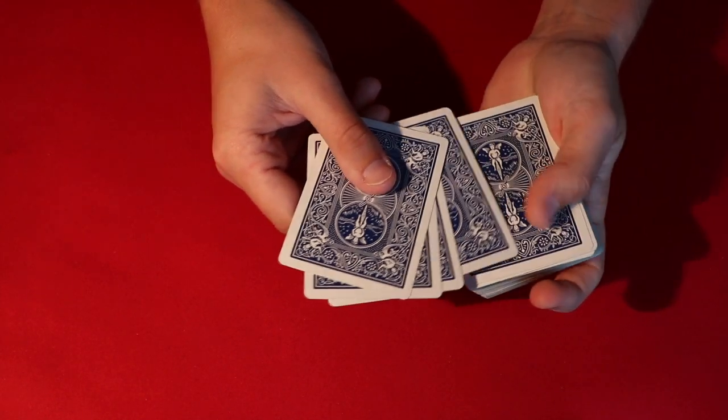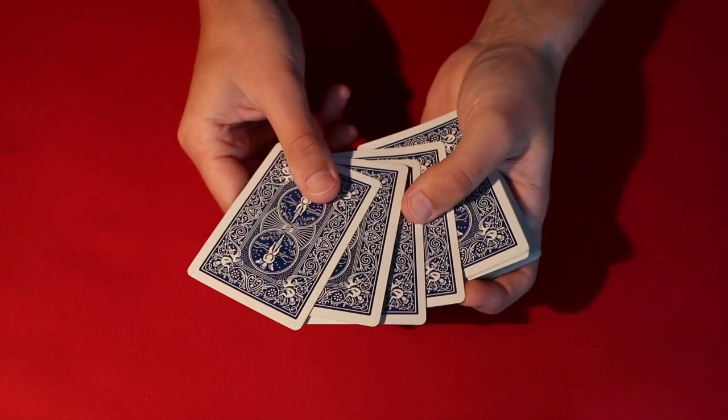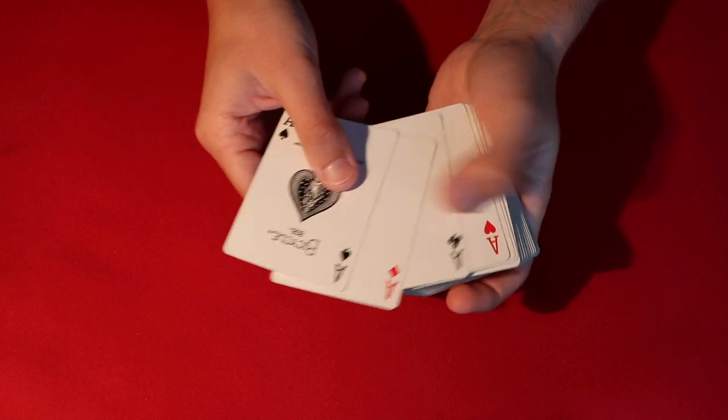At this point you just show the spectators, 'Alright look, we're going to start the trick off.' As you keep that pinky break, you're going to spread over these cards, flip them over, and then you can spread them over again.